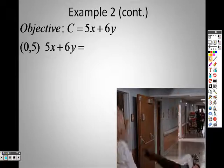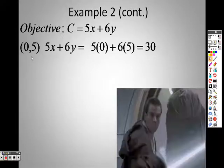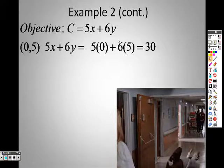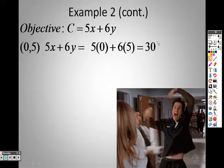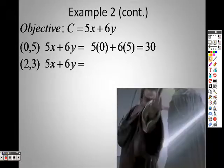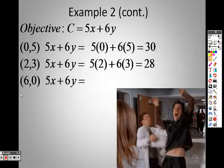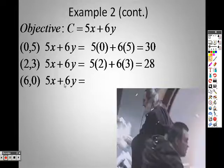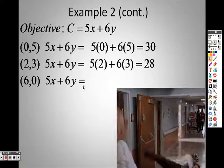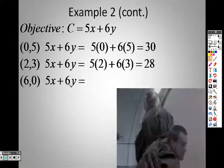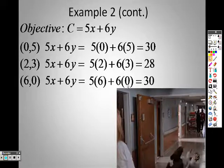So if I plug in the first one, 0, 5, I end up getting 30. If I plug in a 0 for x and a 5 for y, I end up getting 30, right? Because 6 times 5 is 30. Plug in a 2 and a 3. 5 times 2 plus 6 times 3, I get 28. And if I plug in 6, 0, I get 5 times x plus 6 times y. 5 times 6 plus 6 times 0, I get 30.